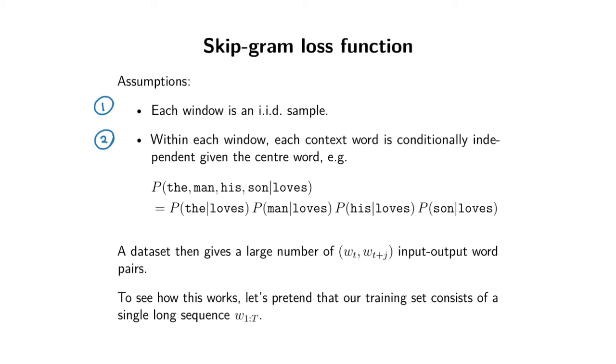Given these assumptions, if you've got a very big training set of words, you end up with a bunch of pairs of input-output word pairs where you've got your center word and your context word that occurs somewhere inside the context window.